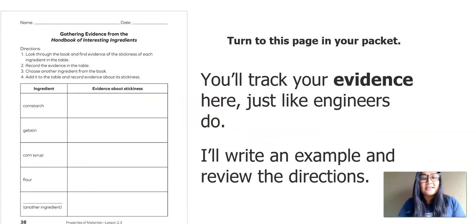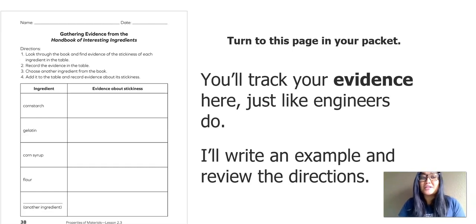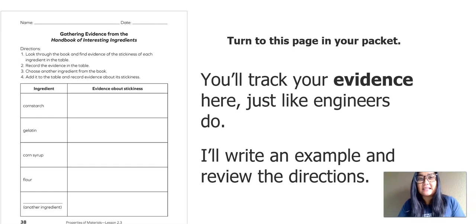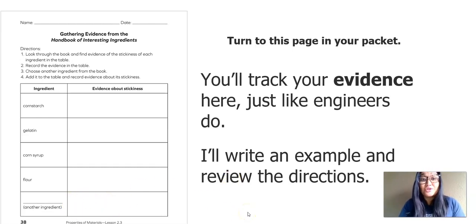Now we're going to turn to this page in our packet. You'll track your evidence here just like engineers do. This worksheet says: Gathering Evidence from the Handbook of Interesting Ingredients. Directions: number one, look through the book and find evidence of the stickiness of each ingredient in the table; number two, record the evidence in the table; number three, choose another ingredient from the book; and lastly, add it to the table and record evidence about its stickiness. The ingredients are cornstarch, gelatin, corn syrup, and flour — and the last one is blank for you to choose.